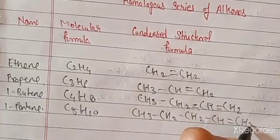Ethene is C2H4; in between the two CH2 groups there is a double bond. Propene is three carbons. In alkanes you add 'ane', in alkenes you add 'ene', in alkynes you add 'yne'.